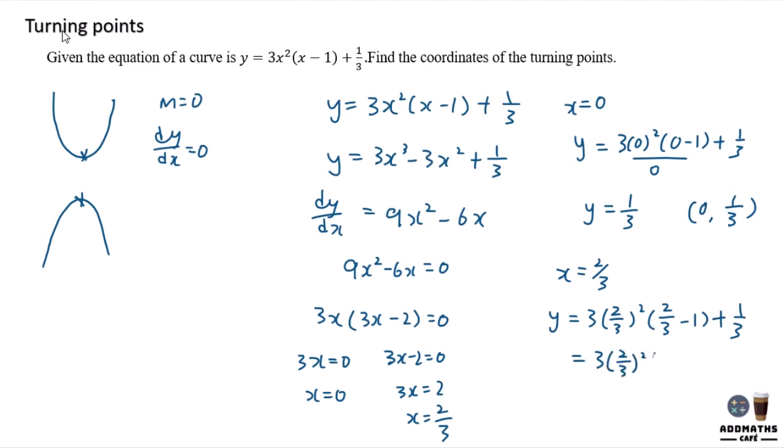So in this case: 3 times (2/3)² times (2/3 minus 1) plus 1/3. By using calculator at the end of the result, I will have, let me see, by calculator I will have negative 1/9.